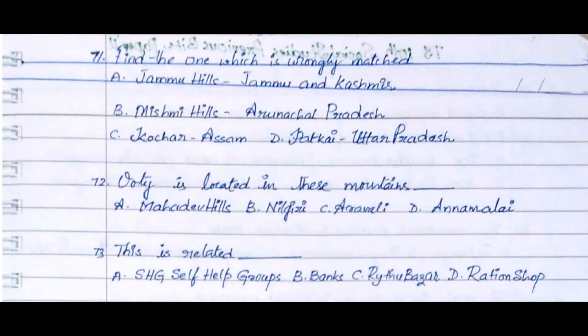Question 71: Find the one which is wrongly matched. Option A. Jammu Hills, Jammu and Kashmir, Option B. Mishmi Hills, Arunachal Pradesh, Option C. Kuchhar, Assam, Option D. Patkai, Uttar Pradesh.